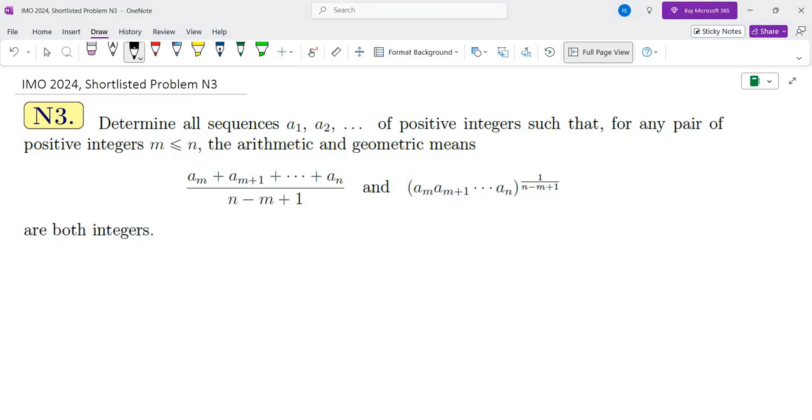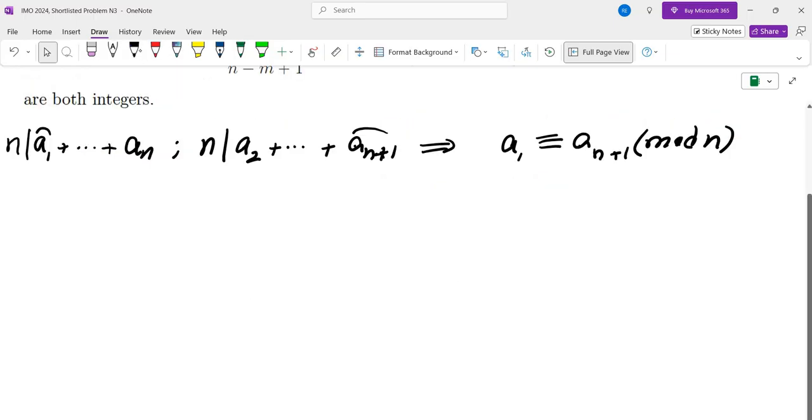I'm going to walk you through the process of obtaining the solution. The first thing that I noticed is that if I look at A1 through AN, this would have to be divisible by N, but also the sum of A2 through AN plus 1 would have to be divisible by N. So what does that mean?